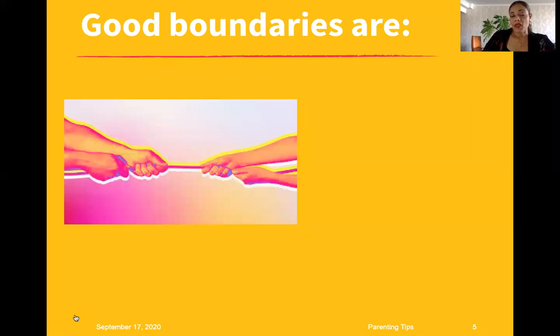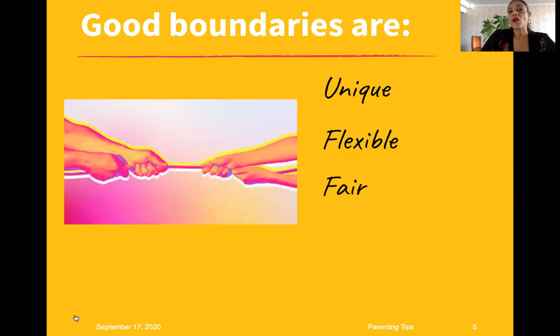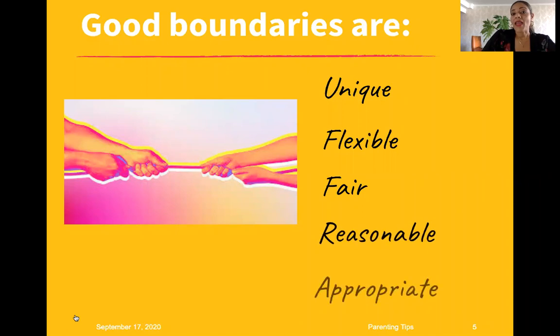Good boundaries are unique to each family. They have to be flexible because they change with circumstances. As young people mature, they can become more involved in the setting of boundaries to suit their new levels of independence. Setting and keeping boundaries can be difficult, for example with an adolescent, but new skills may be needed to negotiate good working boundaries with young people. Boundaries are also fair and reasonable and have to be appropriate for the age and maturity of the young person. As young people mature, there can be more freedoms but there should also be age-appropriate responsibilities.